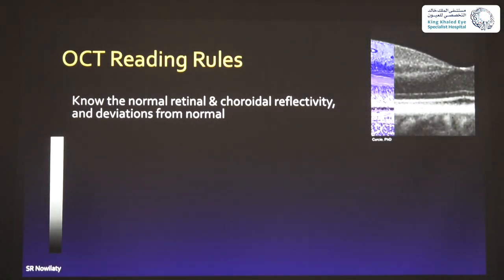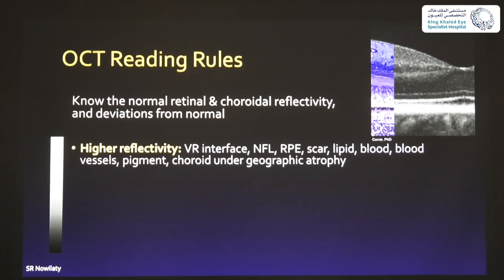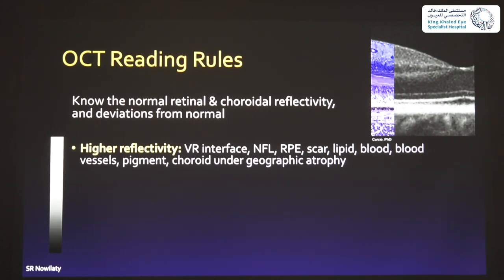OCT reading rules: first you must know the anatomy, then the reflectivity of each structure. If the reflectivity of the outer nuclear layer is not what you expect, that's abnormal. Normally hyper-reflective structures include: the vitreoretinal interface (ILM), the nerve fiber layer, the RPE (very hyper-reflective), any scar, any fibrotic tissue, lipid, blood, and pigment. Any tissue behind a tissue that has lost its reflectivity will also appear hyper-reflective — like light shining through a hole in a curtain, the area behind the hole appears brighter.